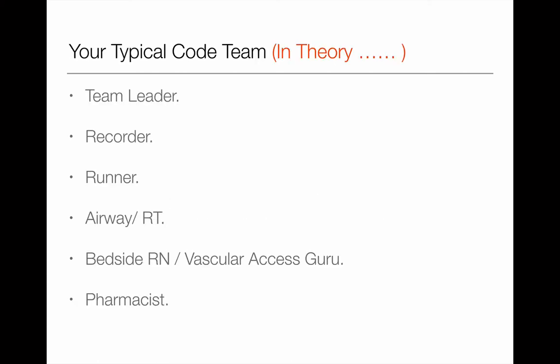Your typical code team on paper includes a team leader, a recorder, a runner, an airway officer - either an anesthetist or RT - a bedside resuscitation nurse who is an extremely good IV access person, and a pharmacist. Those of you who work in the Middle East know that clinical pharmacists are very rare - we have a lot of trouble recruiting and training them, mainly due to funding issues.